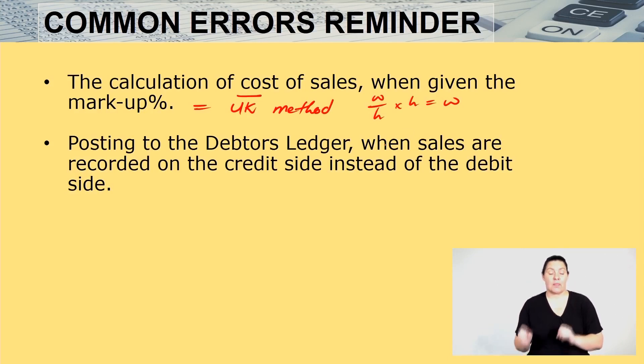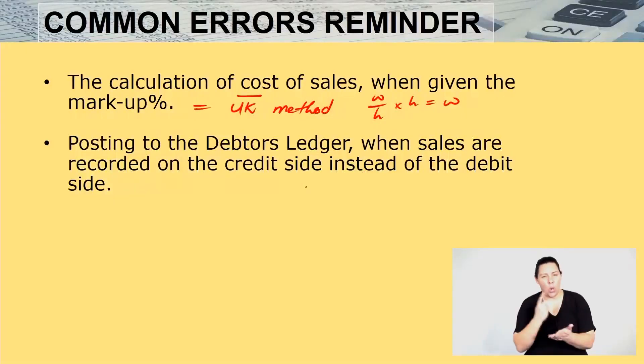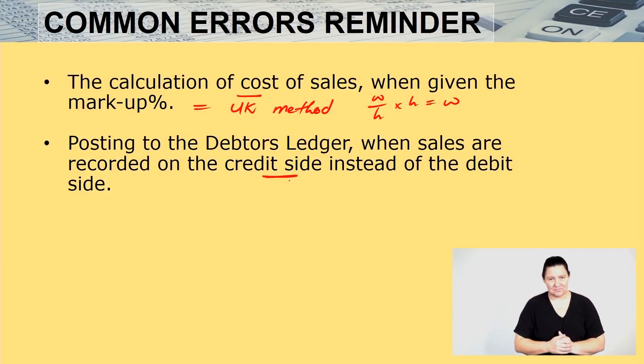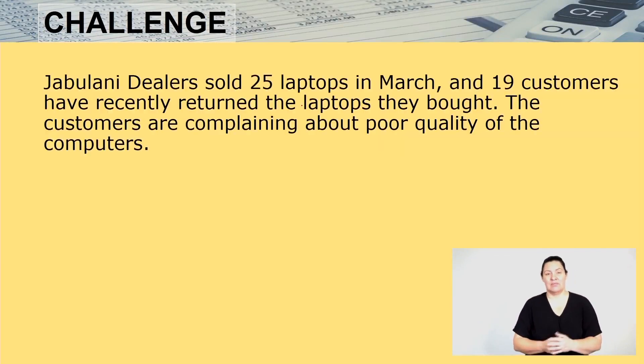When posting to the debtor's ledger, when sales are recorded on the credit side instead of the debit side — this is one of the biggest mistakes that most learners make. When posting to the debtor's ledger, sales must be on the debit side, but some of you will put them on the credit side.